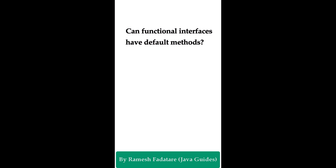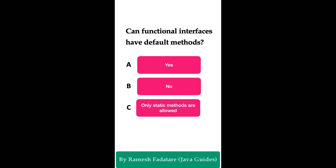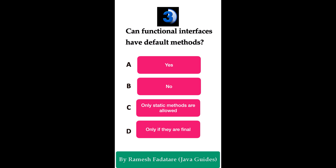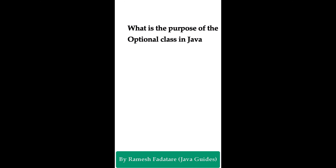Can functional interfaces have default methods? Option A: yes. Option B: no. Option C: only static methods are allowed. Option D: only if they are final. The correct answer is yes. A functional interface contains exactly one abstract method, but it can contain any number of static or default methods. When creating a functional interface, define a single abstract method, and you can also define any number of default or static methods. Annotate it with @FunctionalInterface and use a lambda expression to implement it.